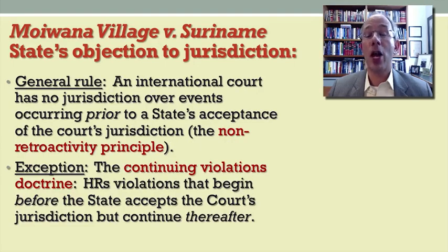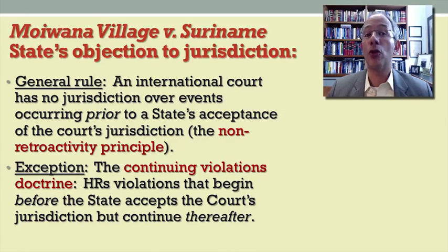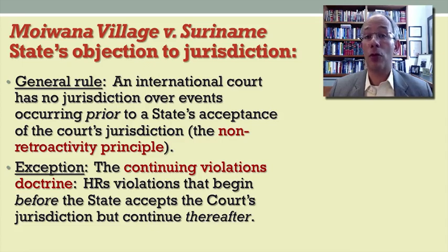Indeed, the general rule in international law is that an international court has no jurisdiction over events that occur prior to the state's acceptance of the court's authority or jurisdiction — that's the non-retroactivity principle. This general rule is subject to an exception, which is known as the Continuing Violations Doctrine.